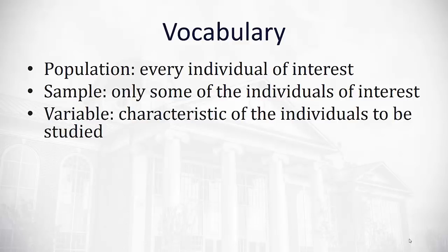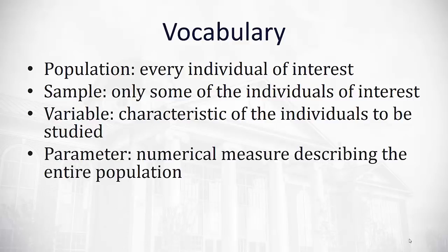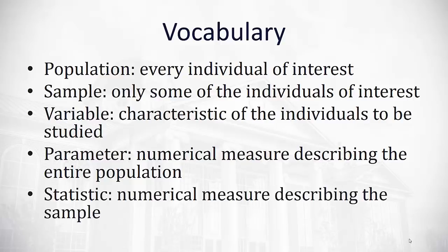Now, we'll also be interested in asking a question as we conduct our study. That question we ask is often called the variable, or a characteristic of the individuals that are going to be studied. We'll use that variable to calculate either a statistic or a parameter. First, a parameter is a numerical measure that describes the entire population. However, it's very difficult to calculate a parameter because there's so many pieces to the population. So instead, we'll actually calculate a statistic, or a numerical measure that describes the sample.